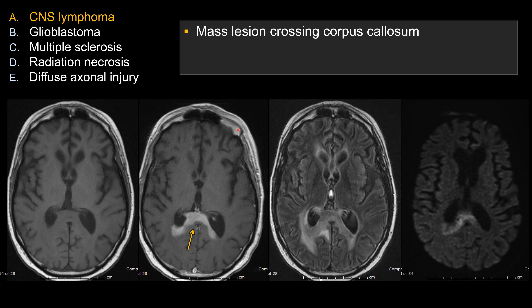The enhancement pattern here is homogeneous. The intra-axial lesion was relatively large in size without any central necrosis, especially involving the corpus callosum or central structures — I think about CNS lymphoma in an immunocompetent patient. Remember, in an immunocompromised patient, CNS lymphoma may show quite a bit of central necrosis or rim enhancement. So this homogeneous enhancement is very characteristic of CNS lymphoma in an immunocompetent patient.